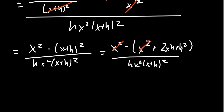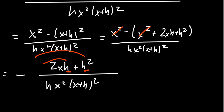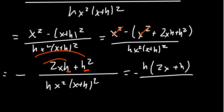Everything remaining in the numerator is negative, so put the negative in front of the fraction. What's left is 2xh + h² over h times x² times (x+h)². Now everything in the numerator is divisible by h. Our goal is to factor out h from the numerator so we can cancel with the h in the denominator — h stands for hate, we hate the h in the denominator, so we have to get rid of it. Factor out h to get (2x + h) left in the numerator, then the h on top cancels with the h on the bottom.